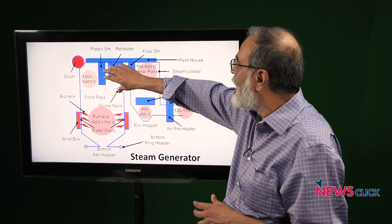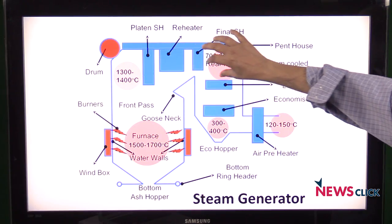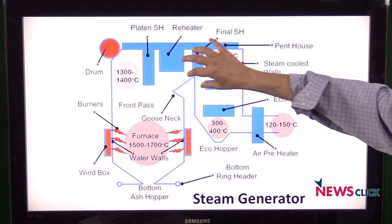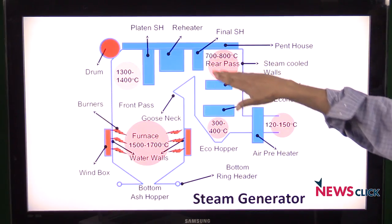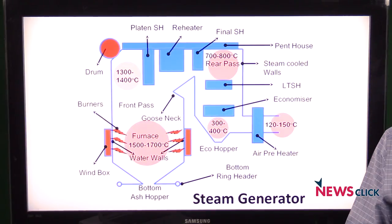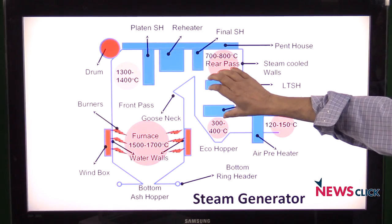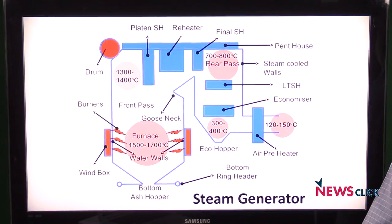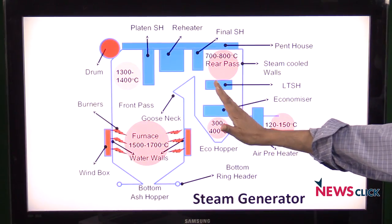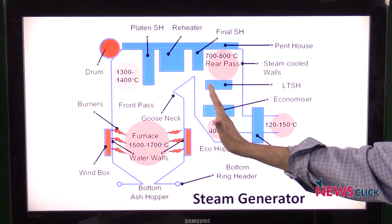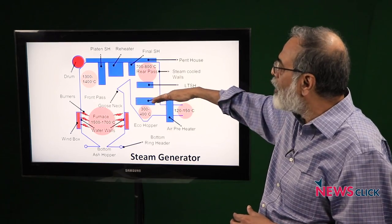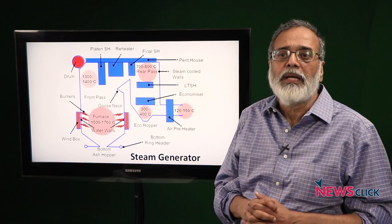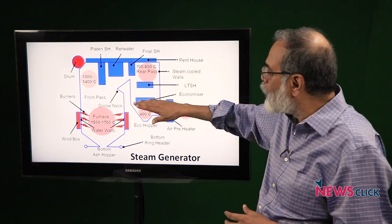The second part that happened was that a lot of unfired fuel was getting carried over into what is called the second pass. Once this lot of unfired coal particles were carried over, they caught fire and there was an explosion here, which led to the economizer flue gas escaping into the atmosphere.